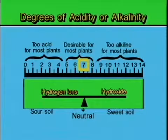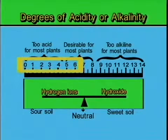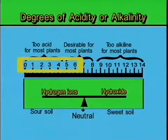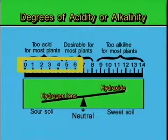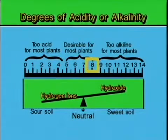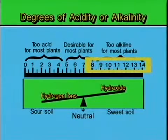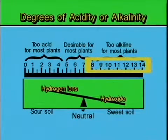If we have a soil that has a pH of 6 or progressing down the scale below that, this soil is becoming more acidic, which means that the hydrogen ion concentration is increasing at the expense of the hydroxide ion concentration. As we progress up the scale above 7 — 8, 9, etc. — we are seeing an increase in the hydroxide concentration at the expense of the hydrogen ion concentration.